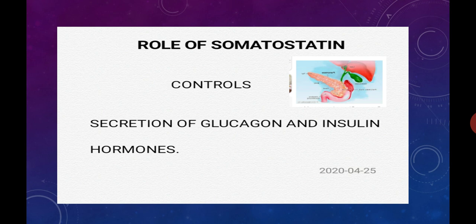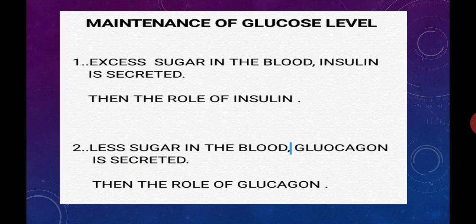Next is the maintenance of glucose level in the blood. If there is an excess of glucose in the blood, insulin is secreted. Being a hypoglycemic hormone, insulin allows hepatocytes and adipocytes to utilize the glucose. As a result, glucose gets utilized and the concentration of glucose in the blood gets decreased.